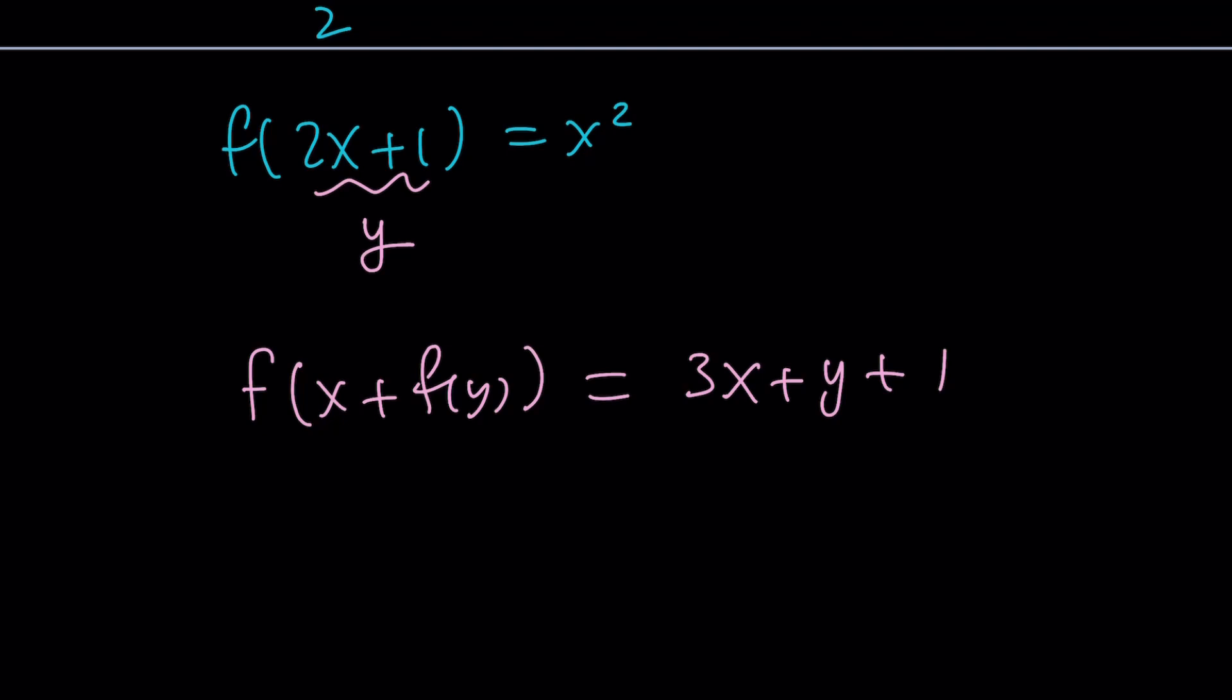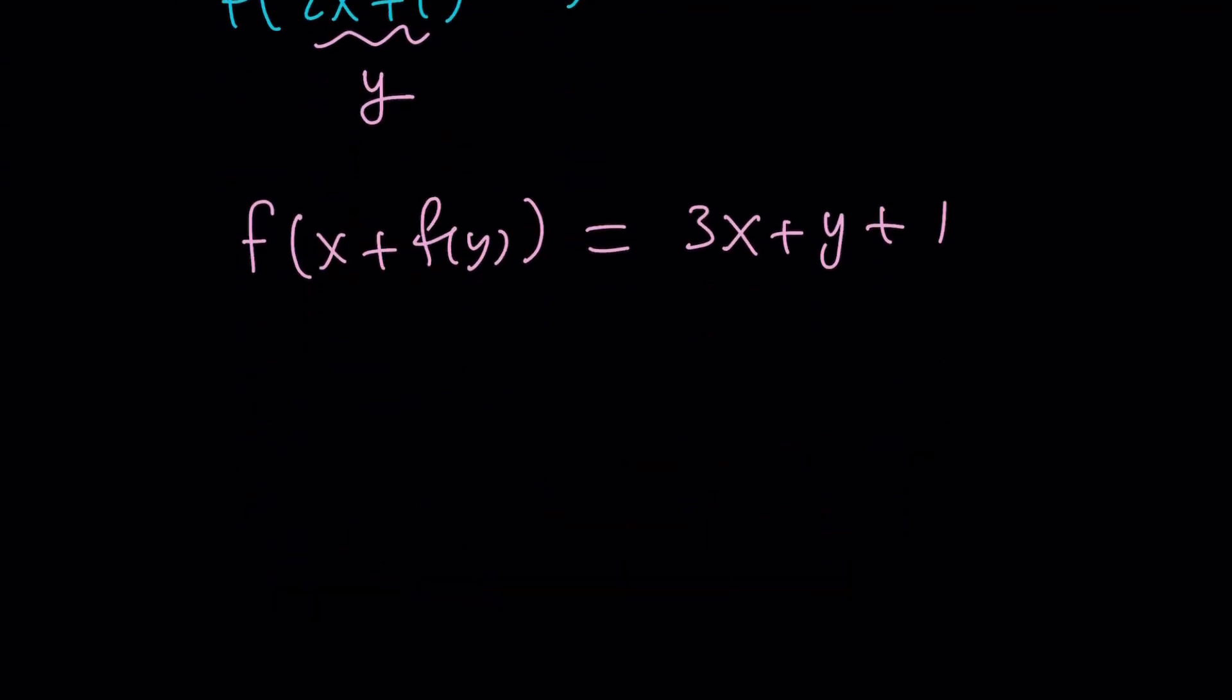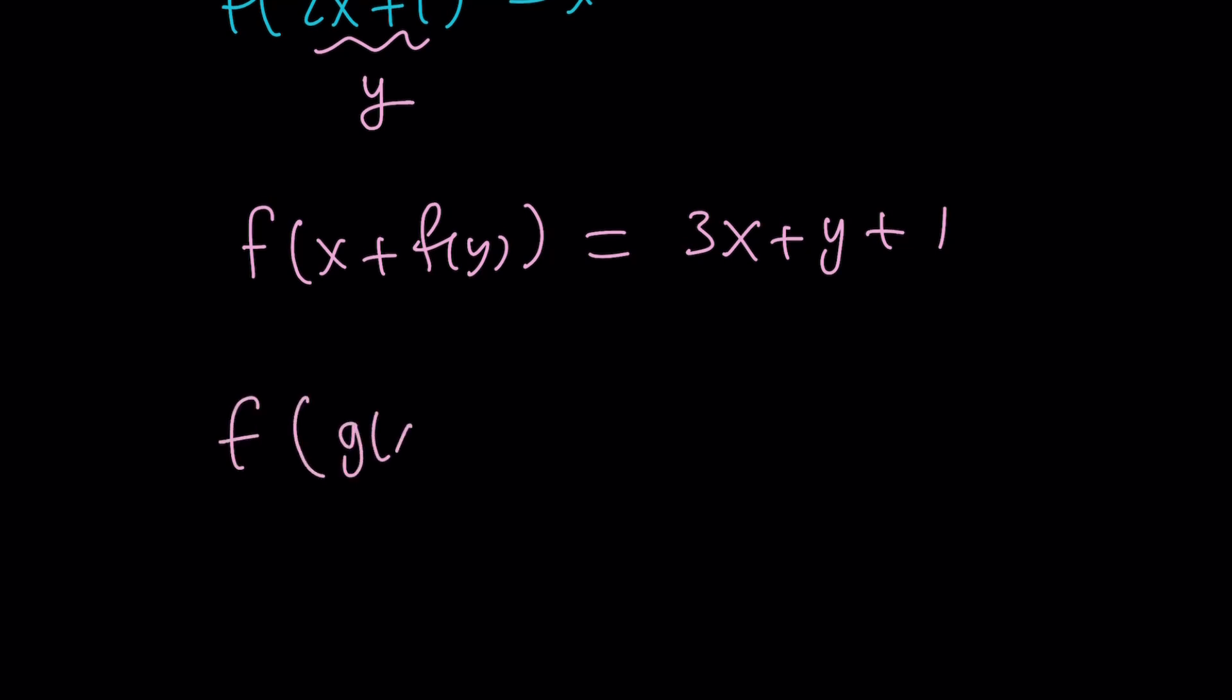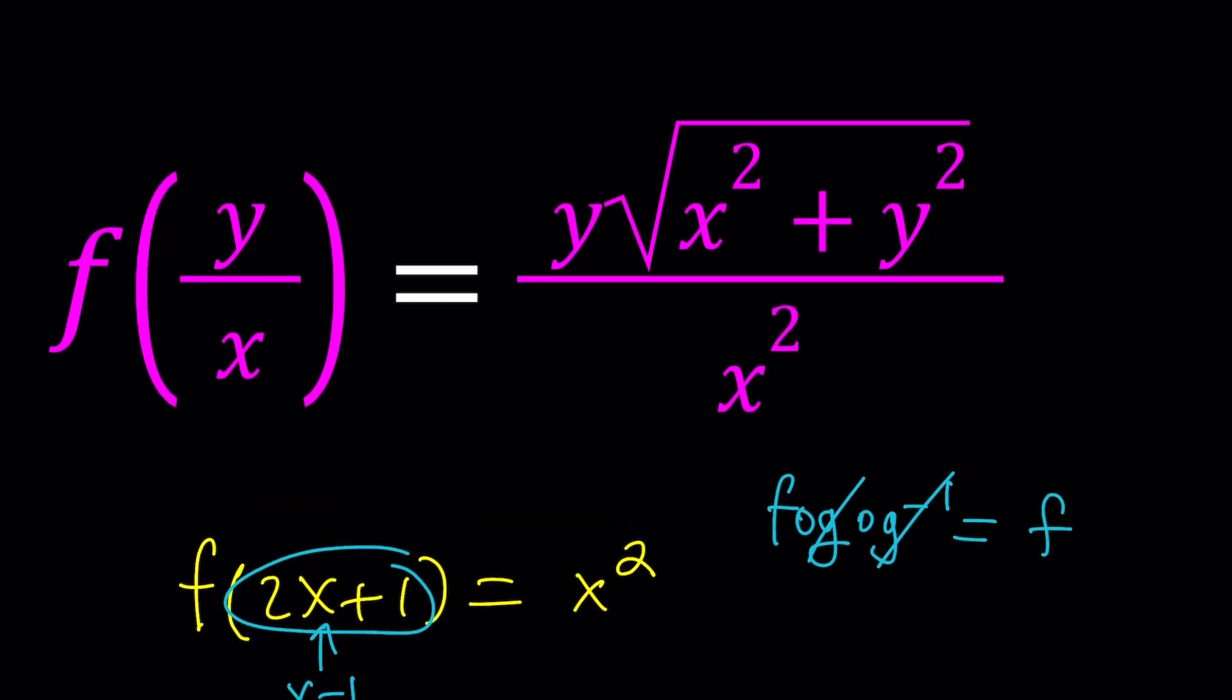Obviously, we can have three variables, too, or we can even have two functions in the equation, such as something like f of g of x plus h of y equals something else, right? Obviously, these equations are going to be harder to solve, but what about this one? This one has two variables, so it probably falls into the second category where we have at least two variables in the equation. So that kind of gives you more freedom. For example, you can just replace x with one, and that should give you something, right?